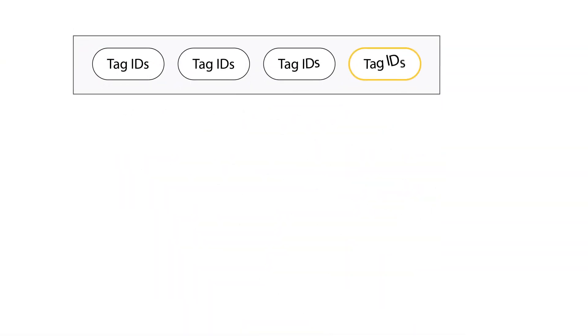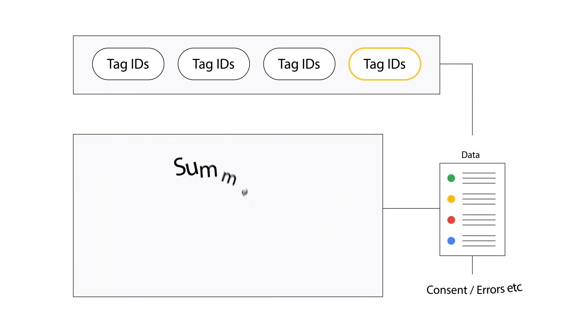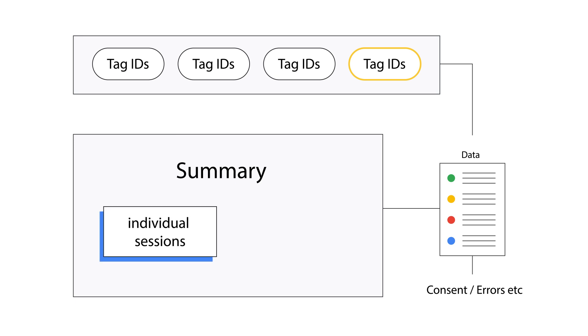Tag Assistant is made up of a few main parts. First, you'll see the tag IDs along the top — select one to see the collected data associated with that tag ID. On the left, you'll see a summary of the data collected, individual sessions, and individual events triggered during your session. Click an event to reveal its details, including the API call in gtag.js or the data layer, the parameters included with the event, and other advanced settings like consent management and errors. You can sift through these tabs to see if what you expect to be collected is actually coming through.